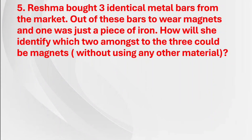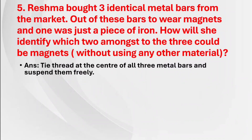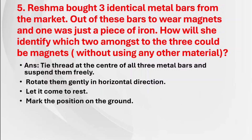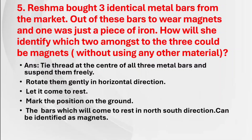Fifth question: Reshma bought 3 identical metal bars from the market. Out of these bars, 2 were magnets and one was just a piece of iron. How will she identify which 2 could be magnets without using any other material? Answer: Tie a thread at the center of all 3 metal bars and suspend them freely. Rotate them gently in horizontal direction and let them come to rest. The bars which come to rest in the north-south direction can be identified as magnets.